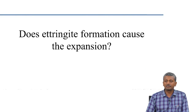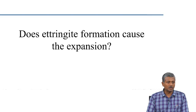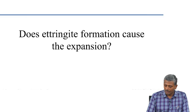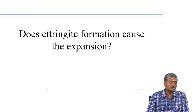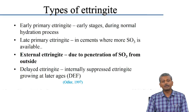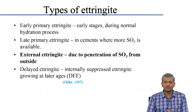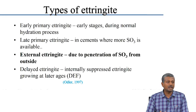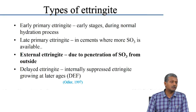Let us talk about whether ettringite formation causes expansion. We know that ettringite has a structure prone to expansion primarily by imbibing moisture, and this expansion can lead to stresses in the surrounding environment that causes cracking. Primary ettringite forms very early in the process — in regular cement hydration, aluminates react with sulphate added into the cement to form early ettringite, which later converts to monosulphate because there is an excess of aluminate present.